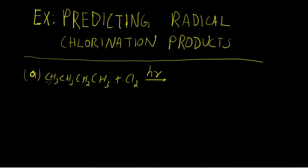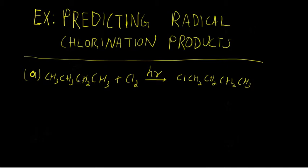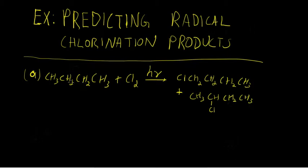We could get chlorination at C1, which would be equivalent to having chlorination at C4. So that would be one possible product. Alternatively, we could get chlorination at C2, which would be equivalent to getting chlorination at C3. We've accounted for all possible products because there are only two types of hydrogens: the terminal primary hydrogens and the two internal secondary hydrogens.